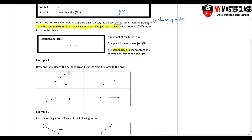The first thing you do is draw and extend the line of action of the force. If this arrow is a force, you extend it — that is the line of action. After you extend the line of action, you draw a perpendicular line from the line of action of the force to the pivot.